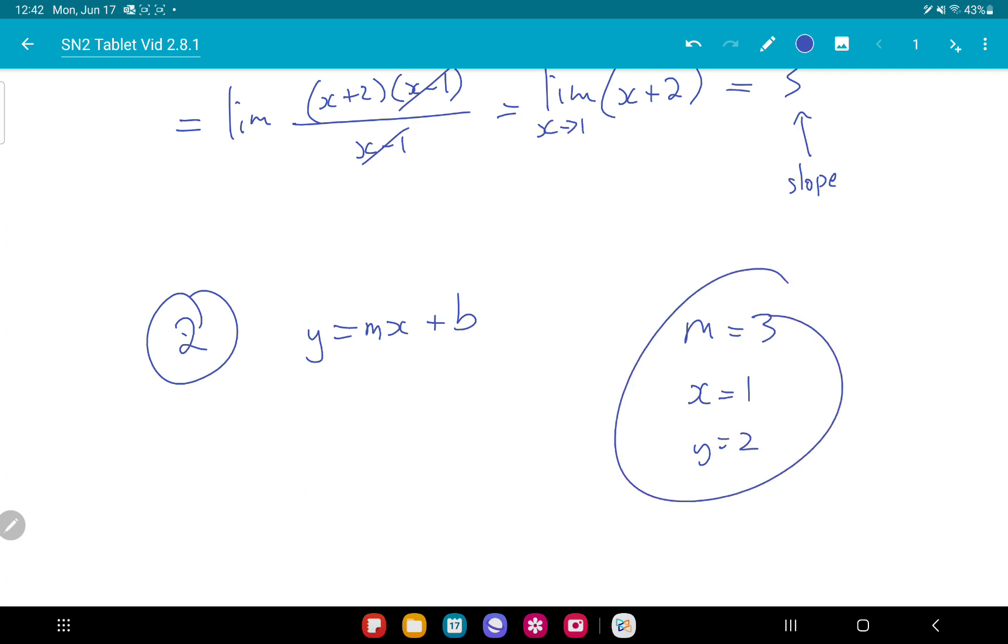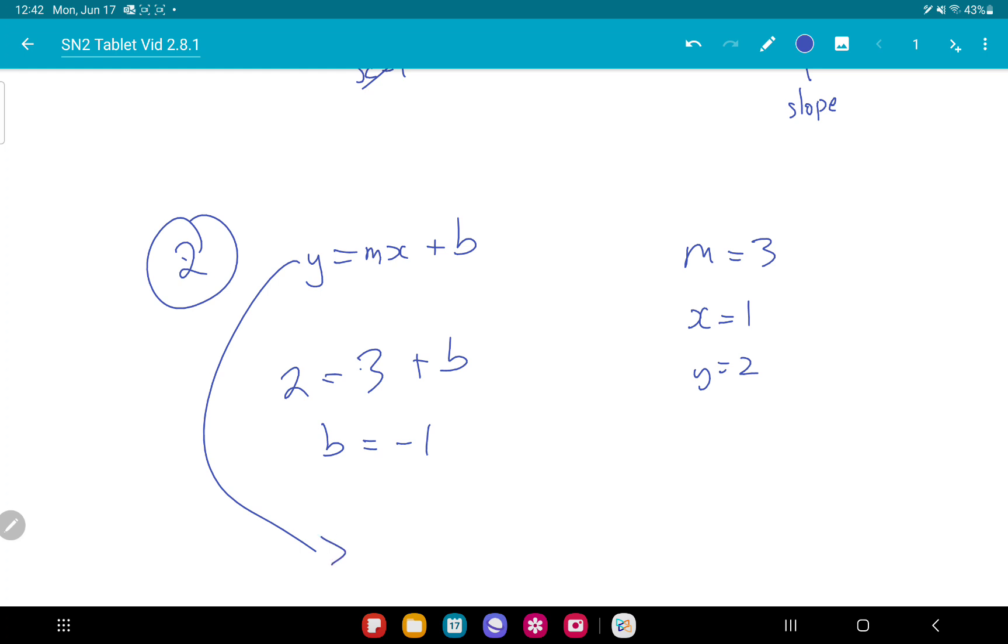So we plug these things in to our line and get two equals three times one, so here's three plus b. So b is negative one, giving us y equals three x minus one.